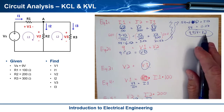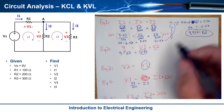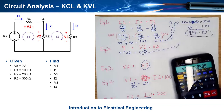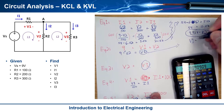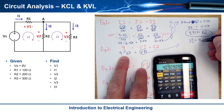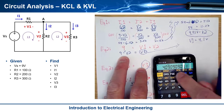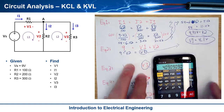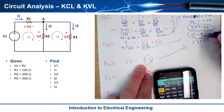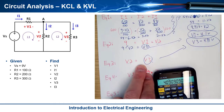Now that V2 = 4.91 V is known, back-substitution is quick. V1 = 9 − V2 = 9 − 4.91 ≈ 4.09 volts, rounded to 4.1 V. And since V2 = V3, V3 = 4.91 volts. Three variables solved.